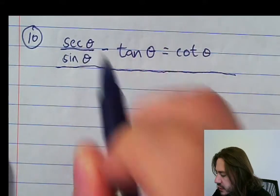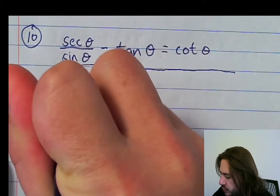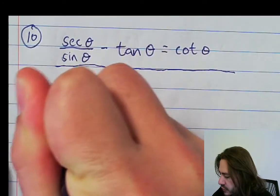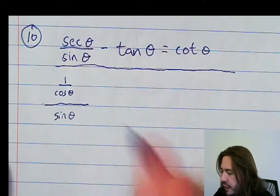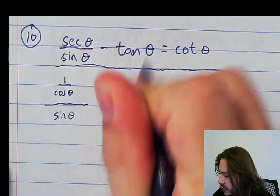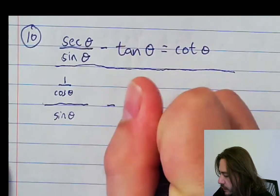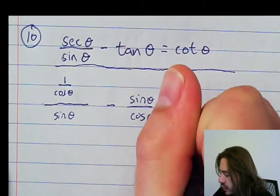So secant theta is 1 over cosine theta, so I'm going to rewrite that as 1 over cosine theta all over sine theta, and I'm going to try to clean up that fraction on the next step. Tangent theta is sine theta over cosine theta. That's one of our quotient identities.